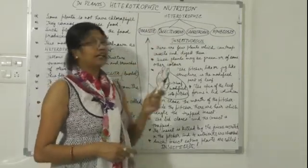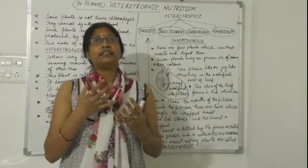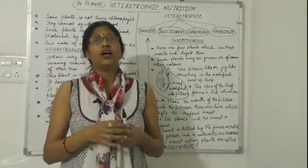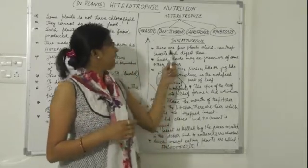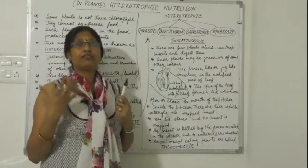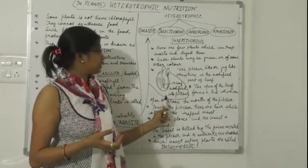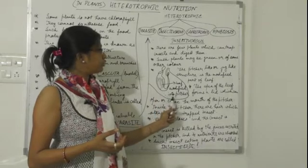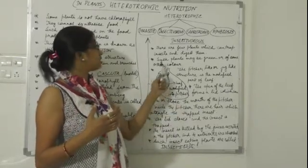The second type of heterotrophic nutrition is insectivorous. 'Vorous' means feeding upon — so insectivorous means feeding upon insects. There are a few plants in our environment which can trap insects and also digest them.